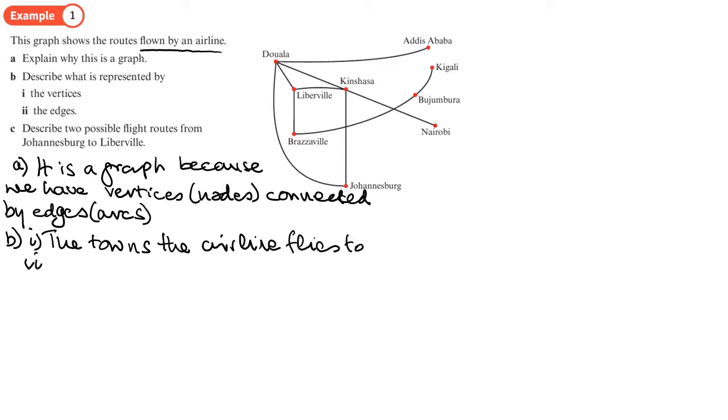The second part of part B, what is represented by the edges. So these are the flight routes between the towns. I suppose you could say it's actually basically showing which towns the plane flies to.